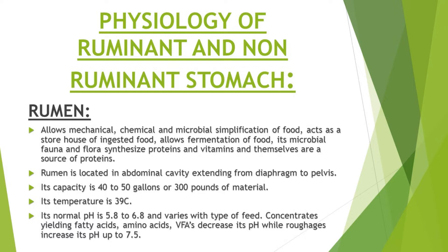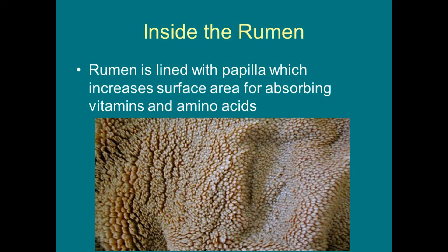Internally the rumen is divided by pillars. The dorsal sac contains on the caudal aspect a dorsal blind sac. Similarly at the caudal aspect of the ventral sac there is a blind sac known as ventral blind sac or diverticulum. The ventral sac contains papillae which give it a towel-like appearance, while the dorsal sac doesn't contain such papillae. The papillae present in the ventral sac are also known as paunch.